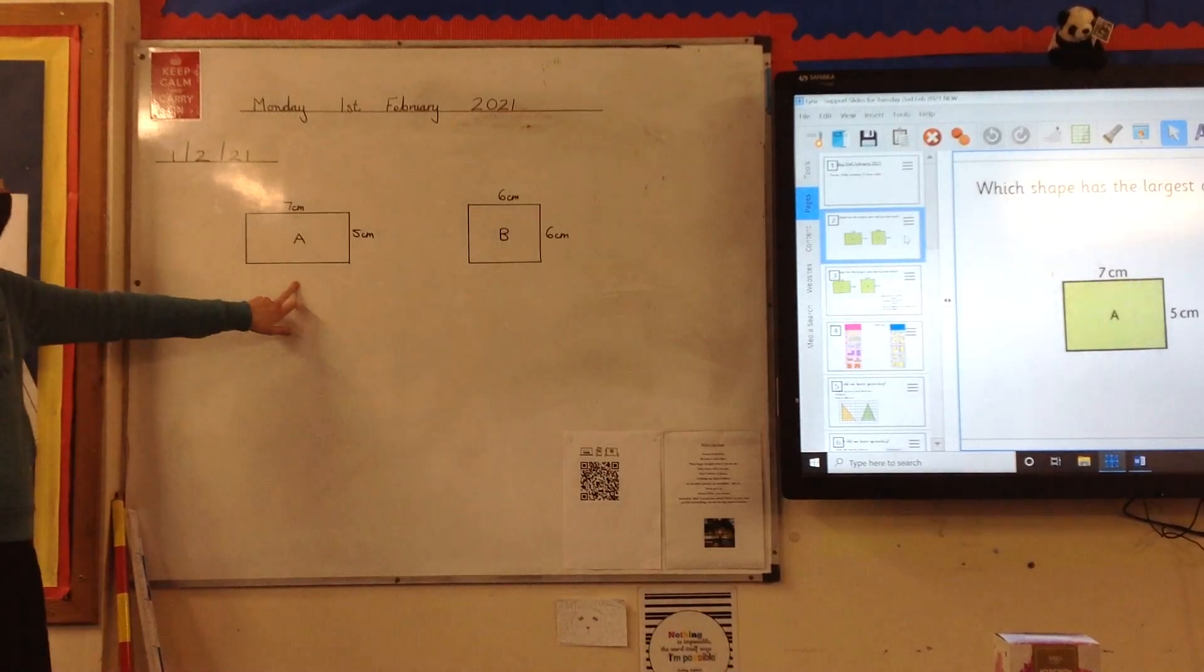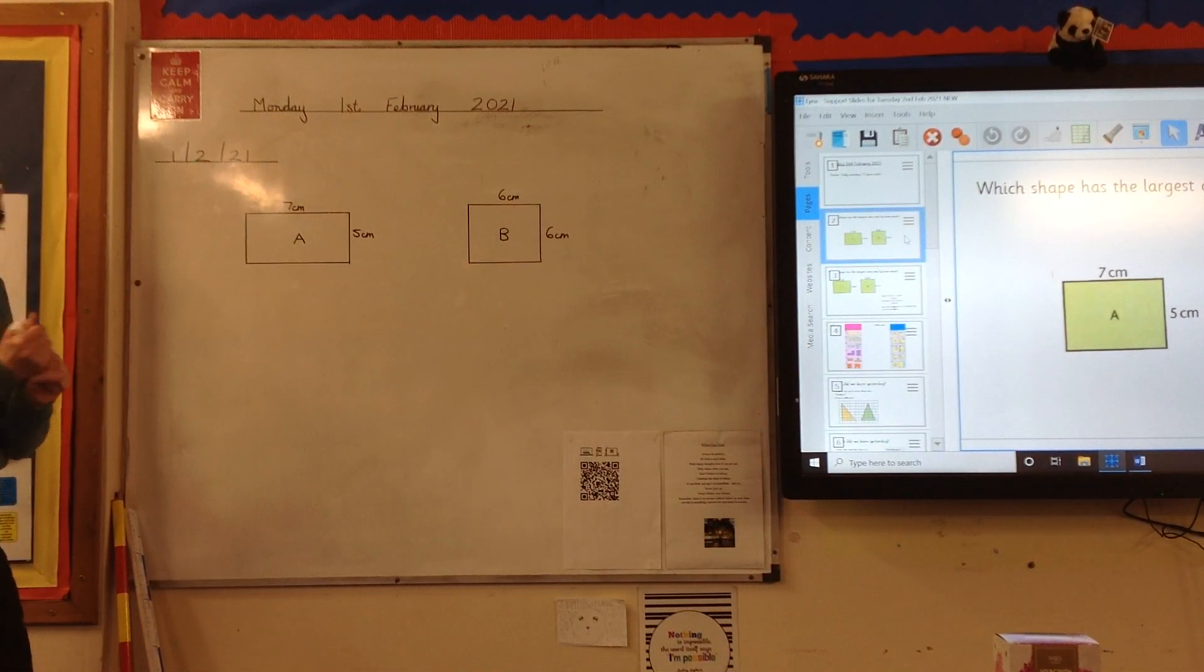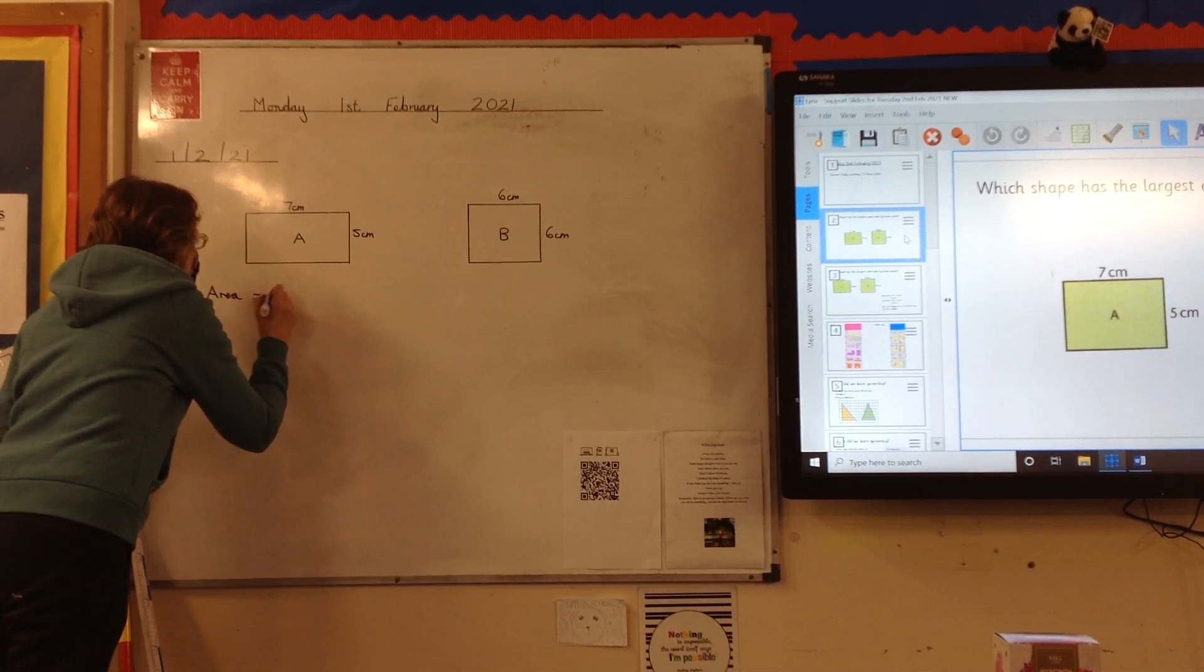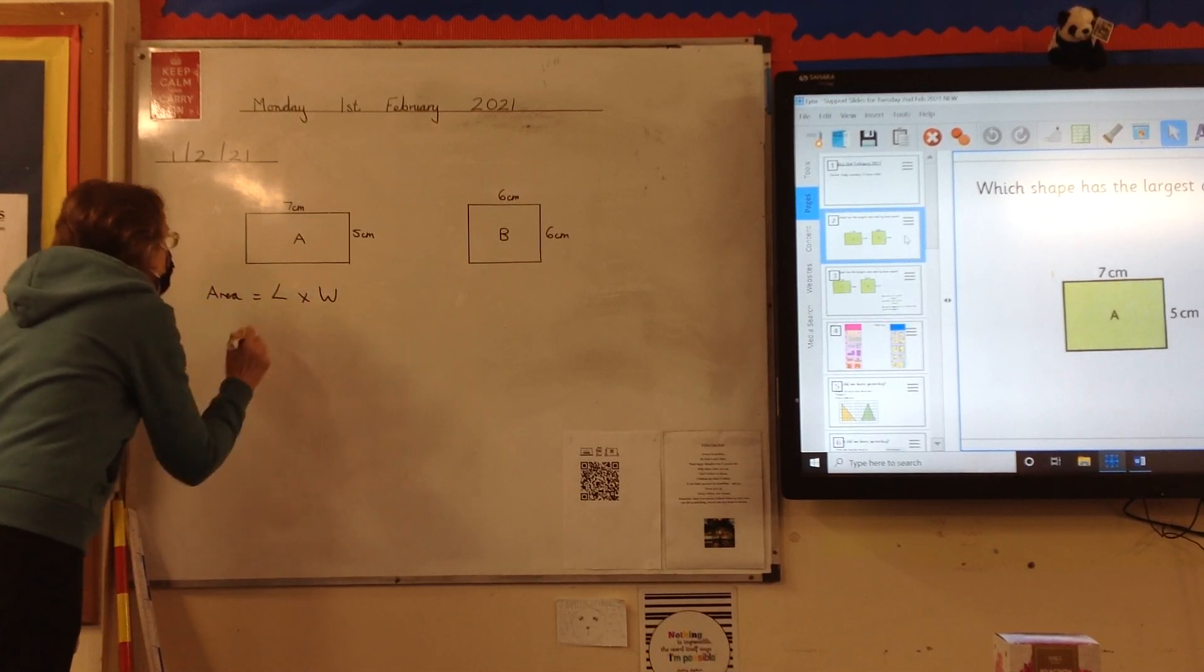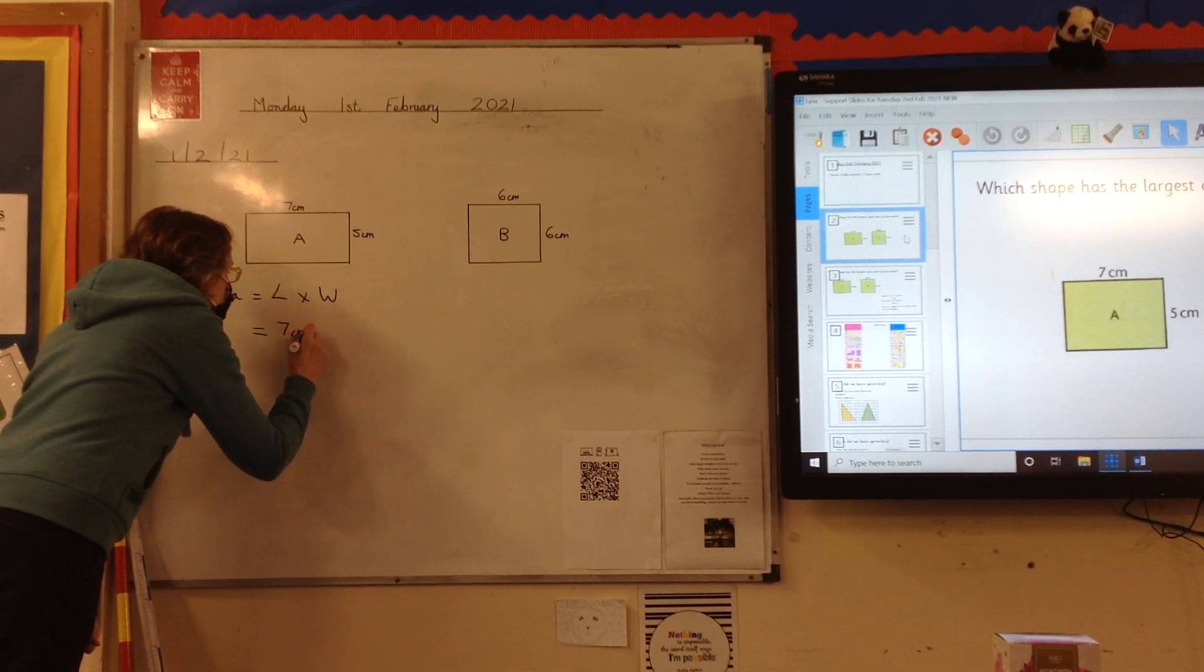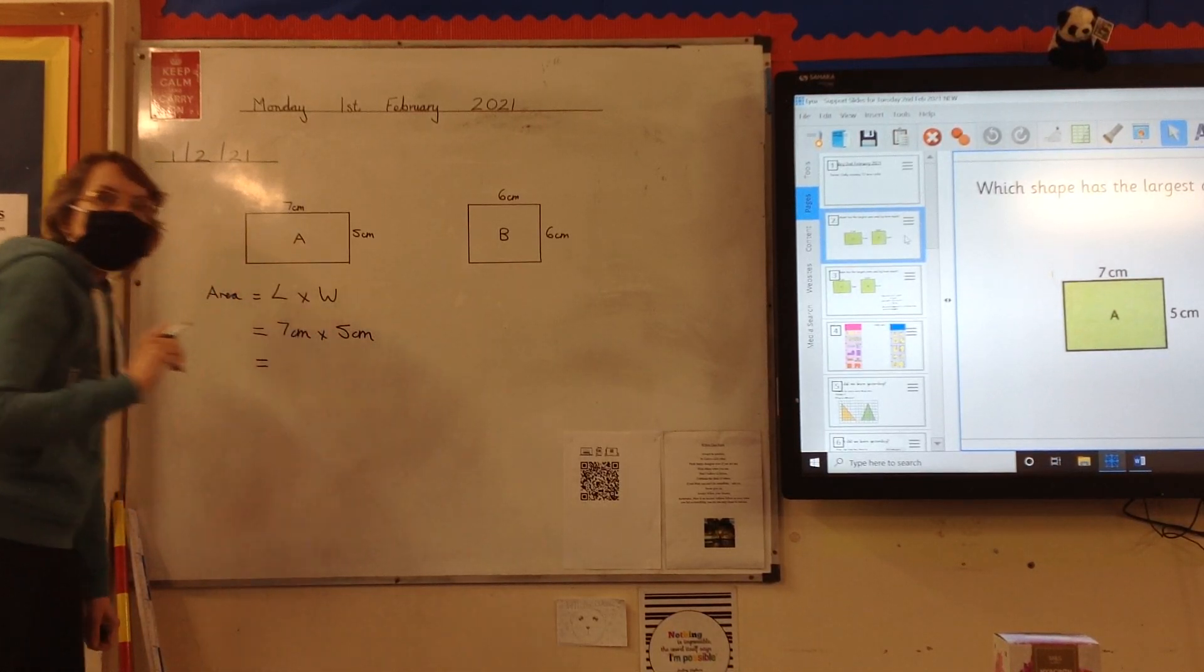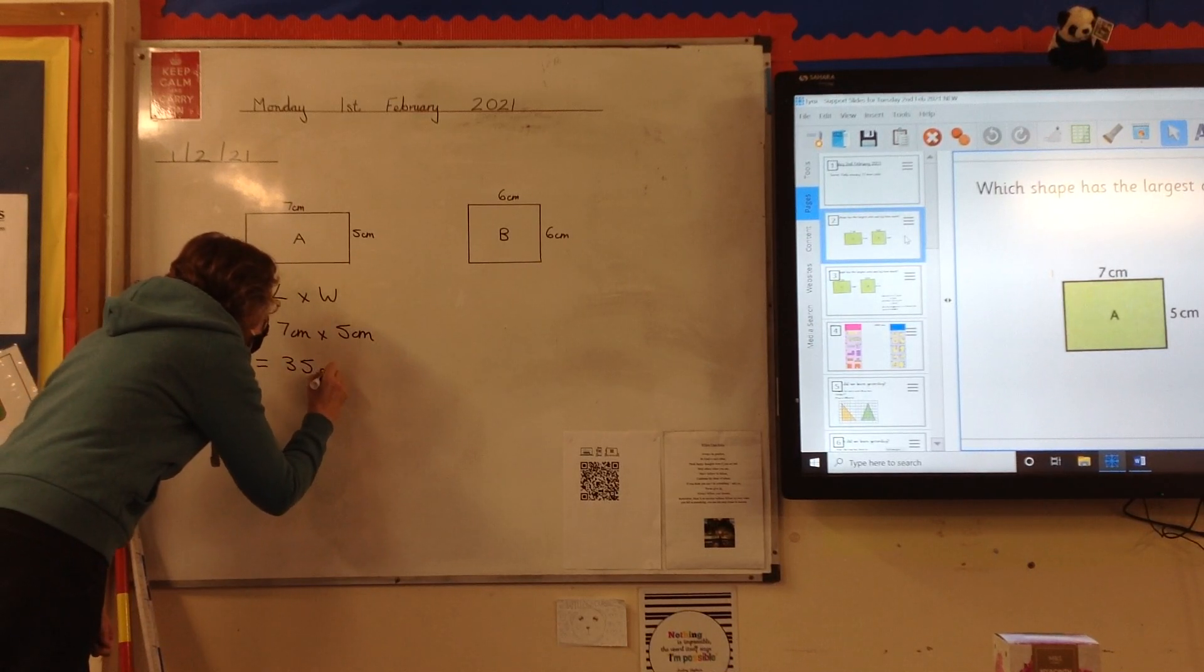How would we calculate the area of shape L? You would do the length, which is 5, times the width, which is 7. Right, good. Area equals length times width. Quite right. We would do 7 centimetres by 5 centimetres, which is 35 centimetres squared.